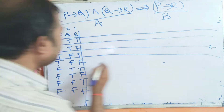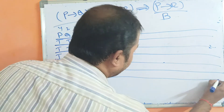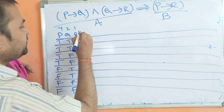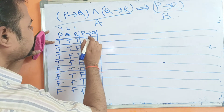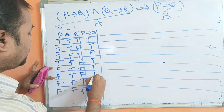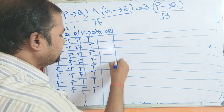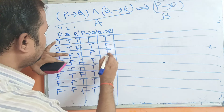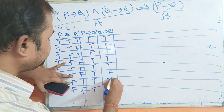Next we compute P→Q, Q→R, then P∧(P→Q) and Q→R. For P→Q (false only when P=T, Q=F): T,T,F,F,T,T,T,T. For Q→R (false only when Q=T, R=F): T,F,T,T,T,F,T,T.